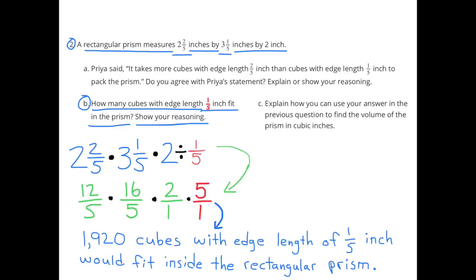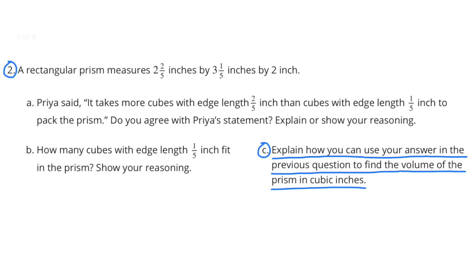Part b: How many cubes with edge length one-fifth inch fit in the prism? Two and two-fifths times three and one-fifth times two, divided by one-fifth, is the same as twelve-fifths times sixteen-fifths times two times five. The result is 1,920 cubes with edge length one-fifth inch fitting inside the rectangular prism.